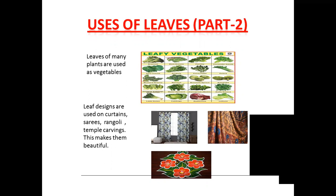Coming to the uses of leaves, we also eat the leaves of many plants as vegetables. We must have eaten vegetables made from spinach, mustard, methi, and cabbage leaves. These leafy vegetables are mixed in the dal and cooked, and sometimes they can be made as chutneys also. They are very helpful for the body and give vitamins and minerals to our body.